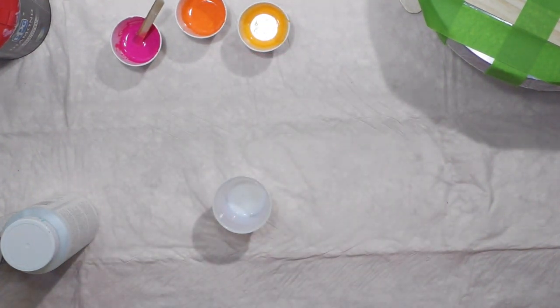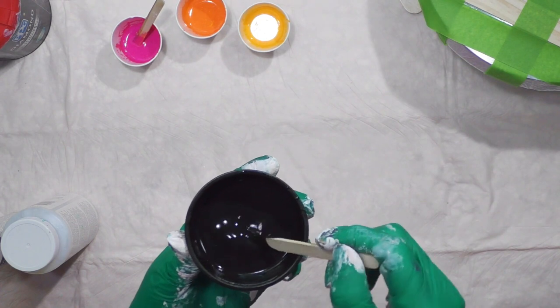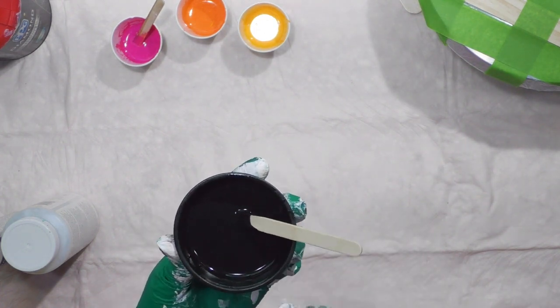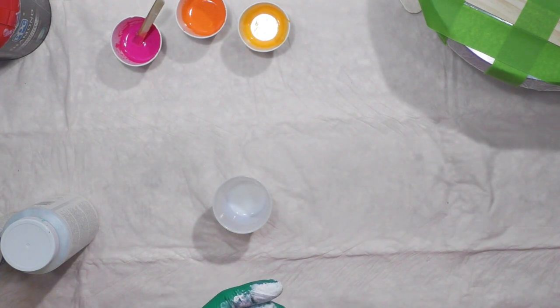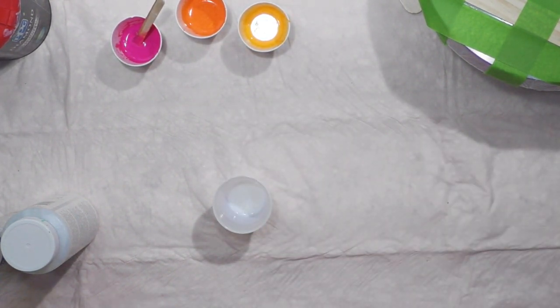I've mixed about four parts Australian Floetrol to one part paint. I also have Australian Floetrol mixed with Golden's Carbon Black. And here's my white in this container. When it comes to cell activator, you don't have to have much at all.